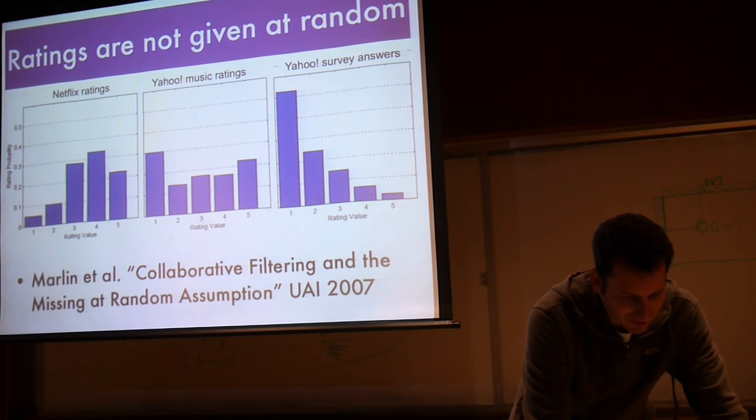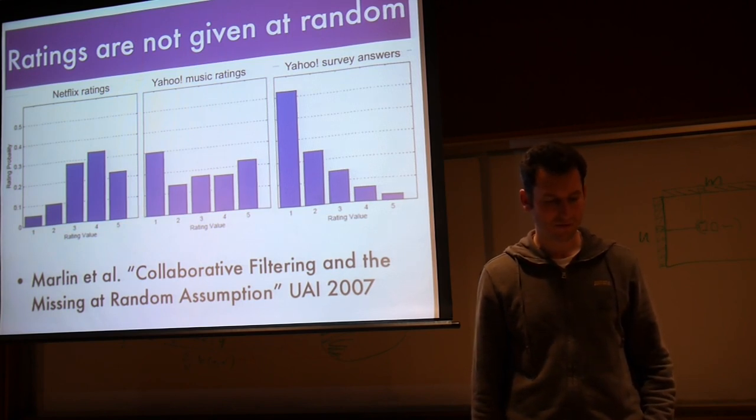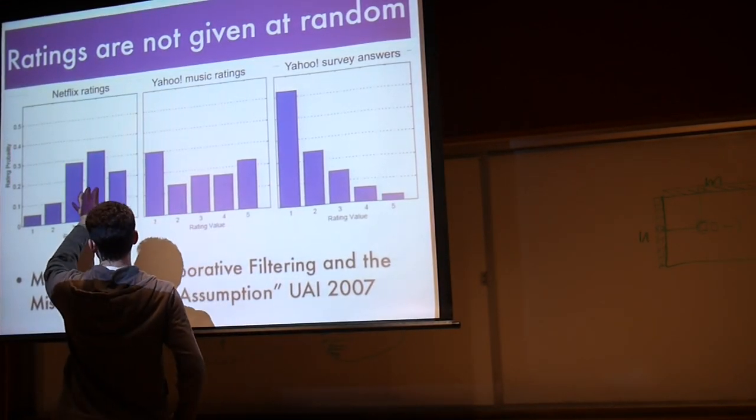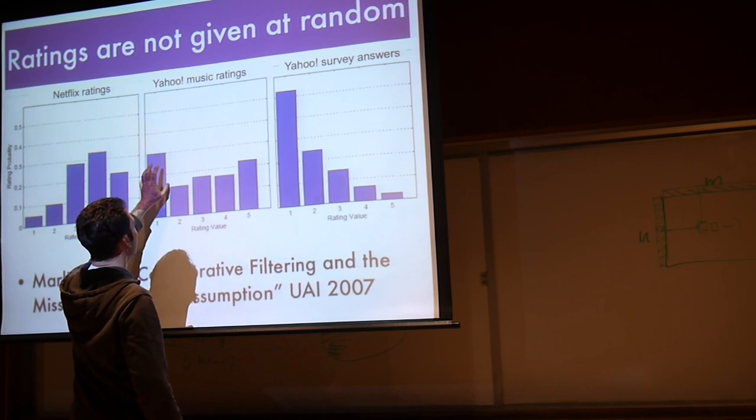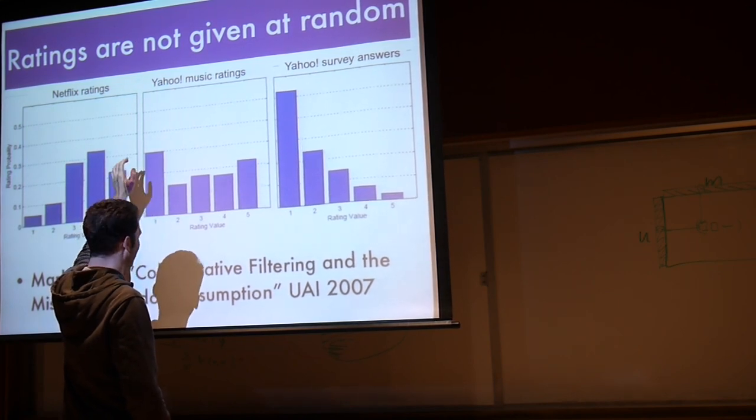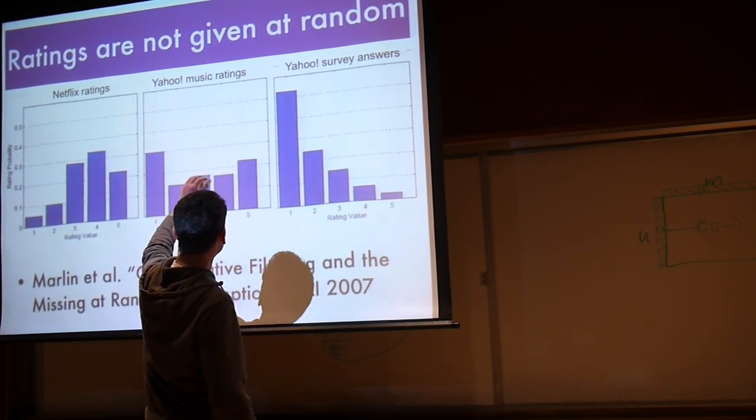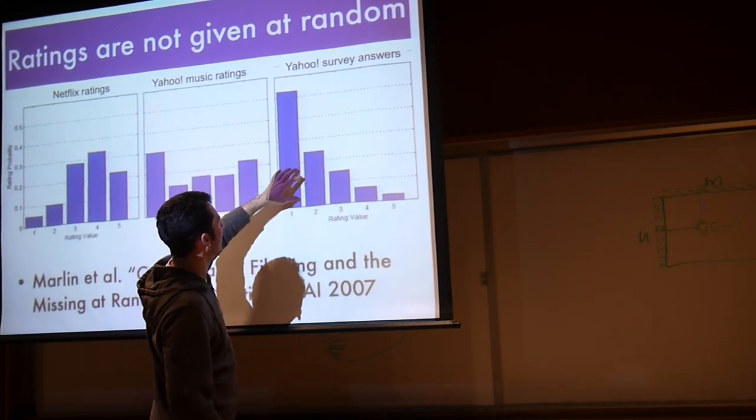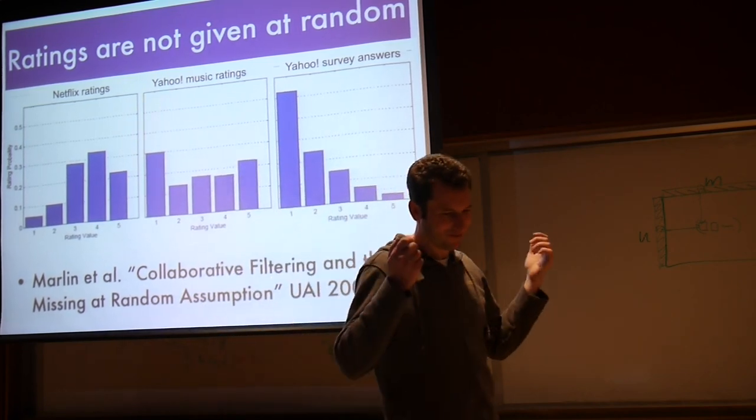The other thing is, of course, the ratings are not at random. If you look at different collaborative filtering data sets, you will see very different rating distributions. Netflix overall, just by having a good recommender system, people actually end up watching only movies they are more likely to like, so they're up here. If you have a recommender system that sucks, which happened to be the case in Yahoo Music, then people ended up listening to a lot of songs that they really, really hated. They also listened to a fair number of songs that they liked, so that's good that you have an increasing trend here, but there are some that they really hated. For Yahoo surveys, everybody seems to hate the answers.